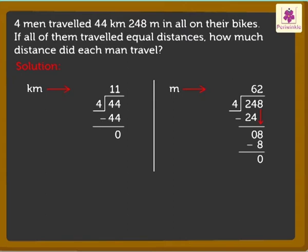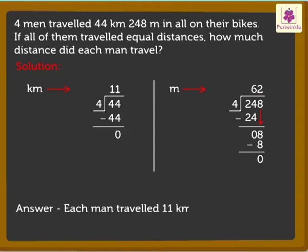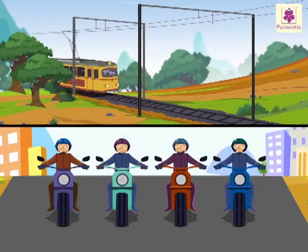So, the quotient is 11 km 62 m. Thus, each man traveled 11 km 62 m. Wow, it was so much fun to see the train travel so fast and the men ride their bikes.